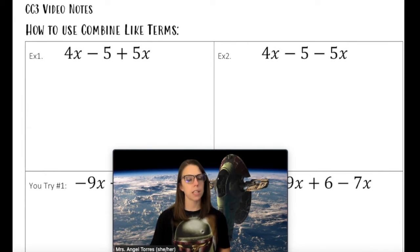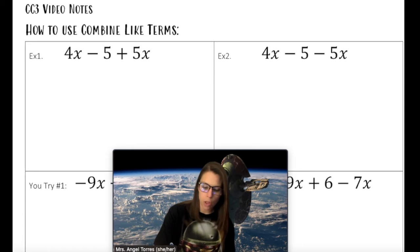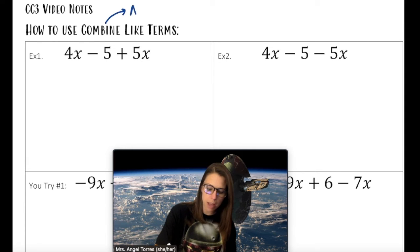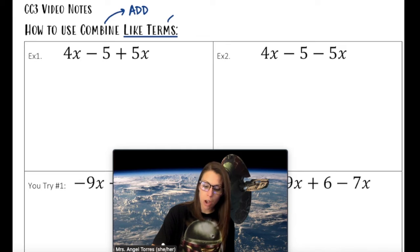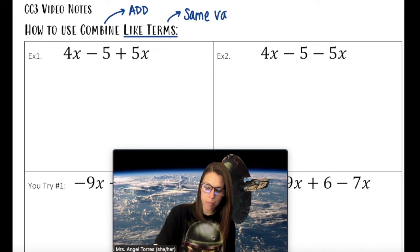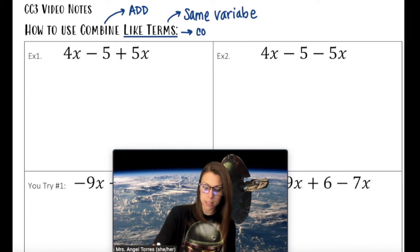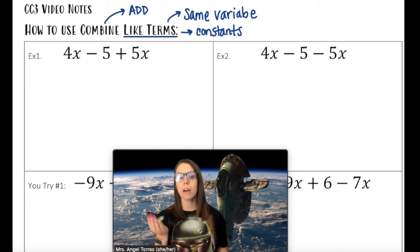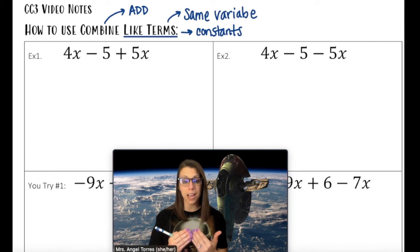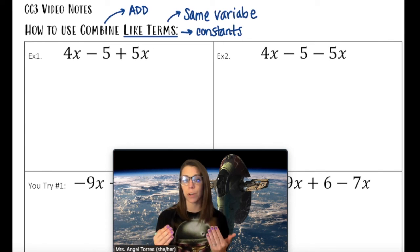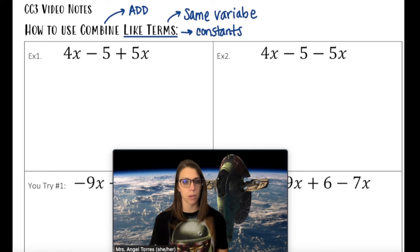Now let's move on to our second tool: Combining Like Terms. The word combine in math means to add. Like terms are terms that have either the same variable, or terms that are constants. You could never combine a constant with a variable term — those are not alike. However, you can combine variable terms with other variable terms, and constants with other constants.